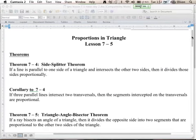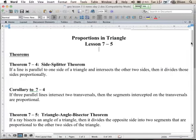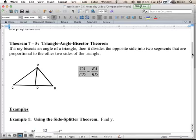The next one we want to look at is the triangle angle bisector theorem. This says if a ray bisects an angle of a triangle into two, or if it divides the opposite side into two congruent segments that are proportional to the other two sides of a triangle.